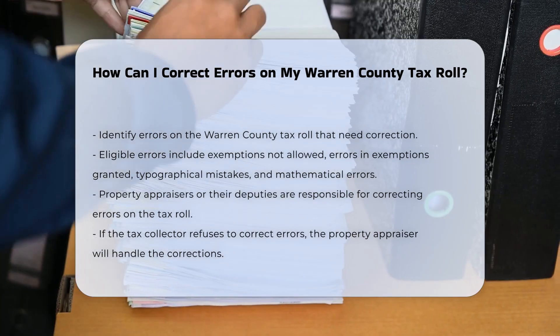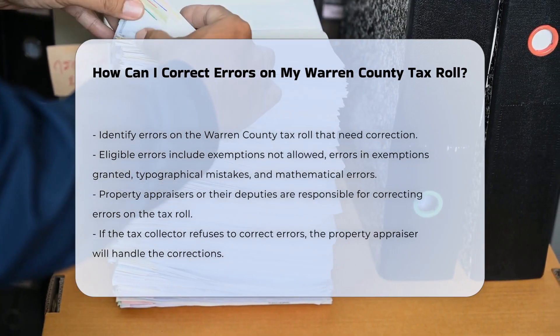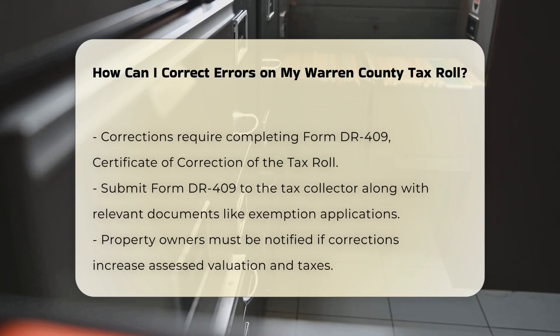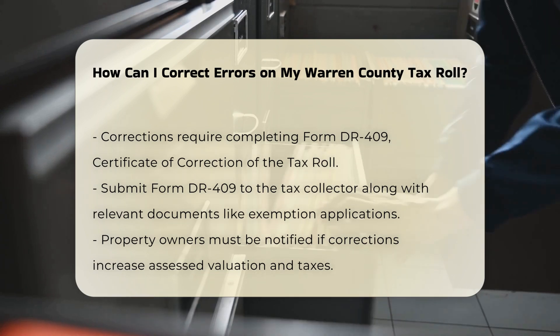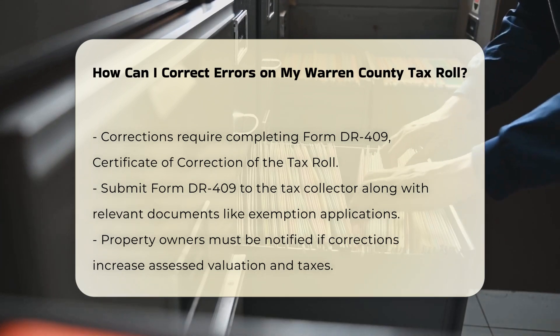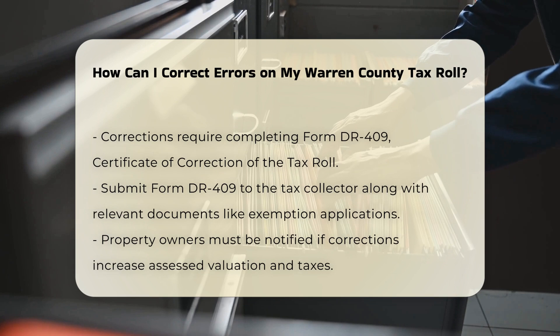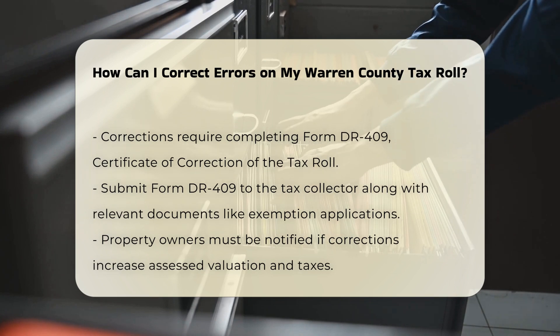Who can correct the errors? The property appraiser or their deputies can correct errors made in the preparation of the tax roll. If the tax collector refuses to correct the errors, the property appraiser is responsible for making the corrections.